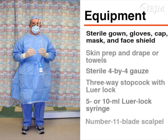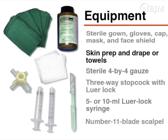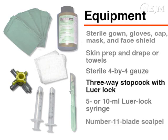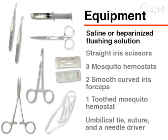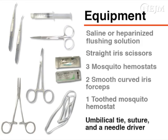To ensure the highest level of sterility, the operator should wear a sterile gown and gloves, as well as a surgical cap, mask, and face shield. Most equipment can be found in commercially prepared kits and should include skin preparation solution, a surgical drape with central opening and sterile towels, sterile 4x4 gauze, a 3-way stopcock with luer lock for each catheter port, a 5 or 10 milliliter luer lock syringe for each port, a number 11 blade scalpel, saline or heparinized flushing solution, straight iris scissors, three mosquito hemostats, two smooth curved iris forceps, one toothed mosquito hemostat, an umbilical tie, suture, and a needle driver.